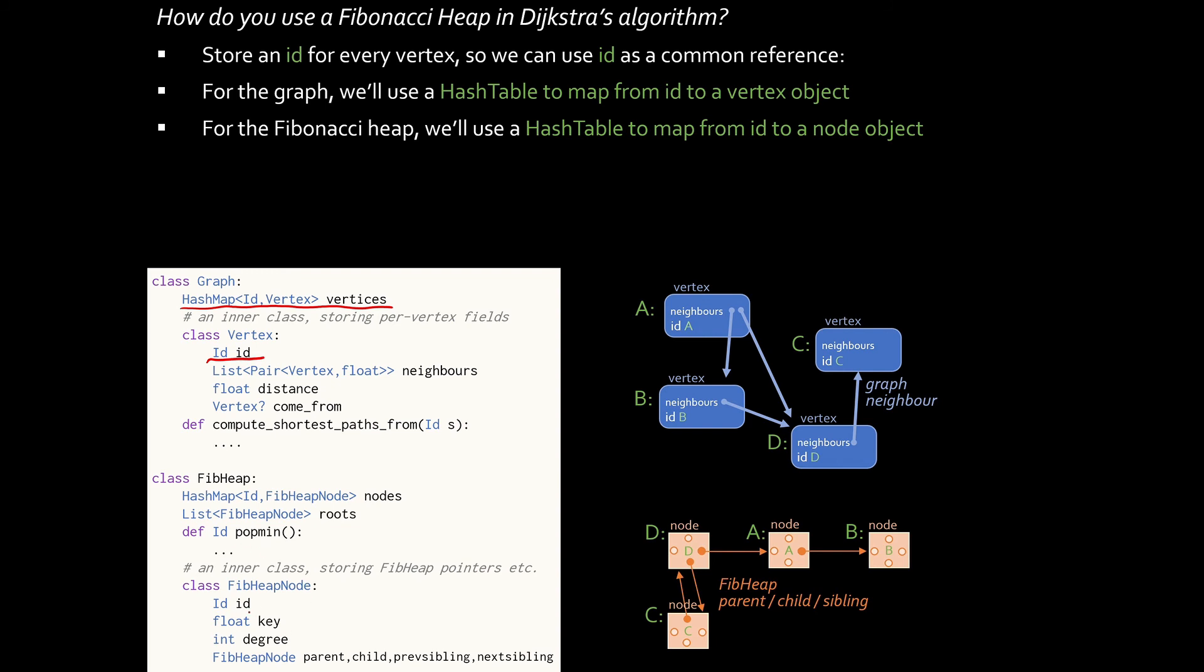Likewise, with the Fibonacci heap, I'll say that each node in the heap has an ID, and I'll store a hash map which says, given an ID, how do I look up the Fibonacci heap node for that ID? And so, for example, the pop min function will return an ID. Dijkstra's algorithm would call pop min. It would get an ID. It would use the graph object to look up what's the vertex object for that ID.